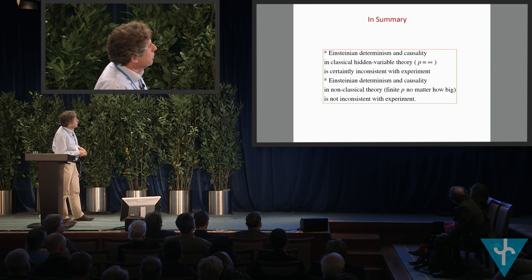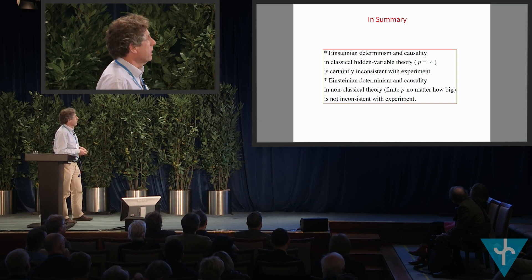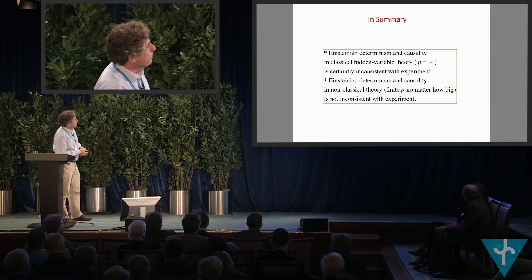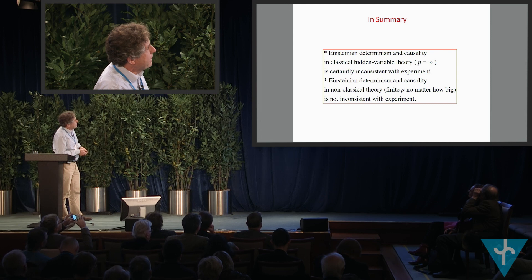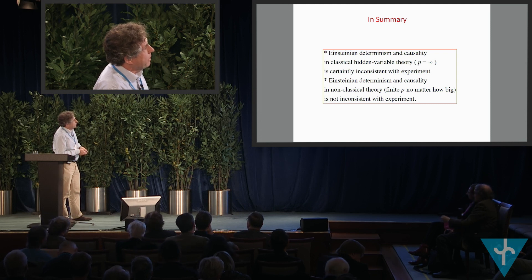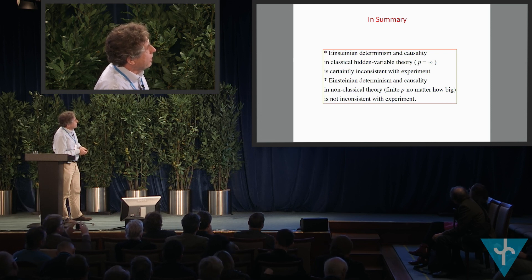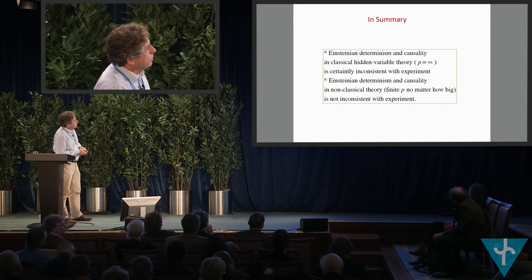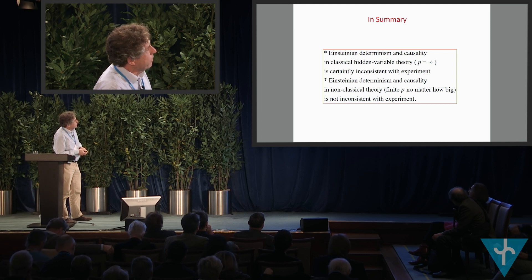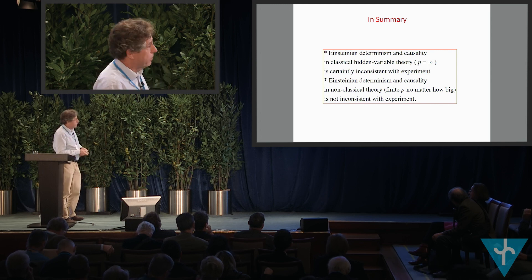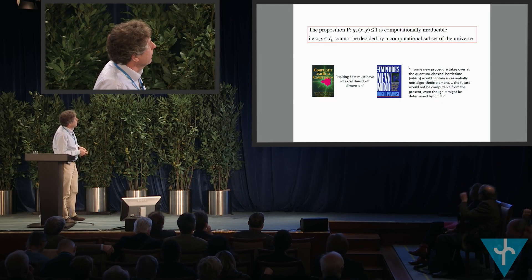One point I can't fully justify here: I can go to classical theory by letting p equal infinity. This is well known in number theory — the p-adic metric goes to the Euclidean metric in the singular limit p equals infinity. I can say that Einsteinian determinism and causality is inconsistent with classical hidden variable theory at p equals infinity, but my main conclusion is that Einsteinian determinism and causality in a non-classical theory — meaning a theory where I use a finite p and g_p is not Euclidean — is not inconsistent with experiment.